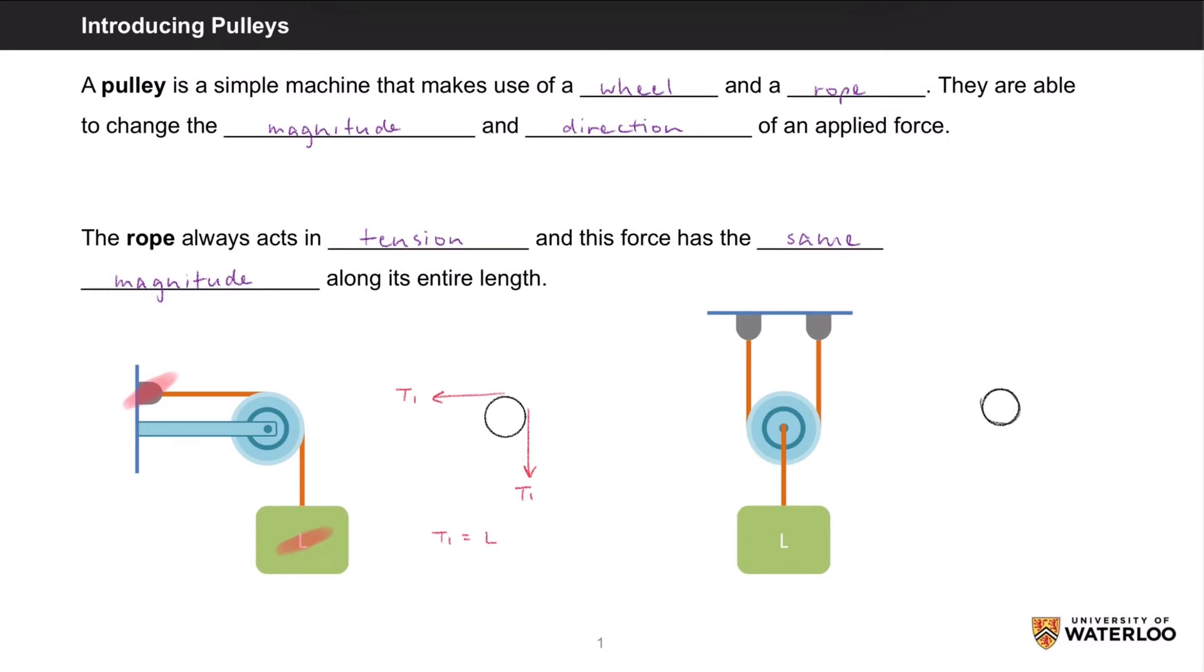As for the figure on the right, we have two upward forces we'll call T2, and they will both be equal to half of the weight of the load, since the load is the only applied force on the system, and it is acting opposite of the two ropes.